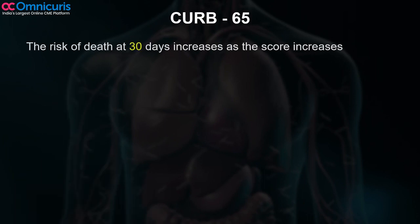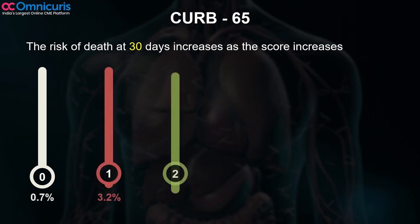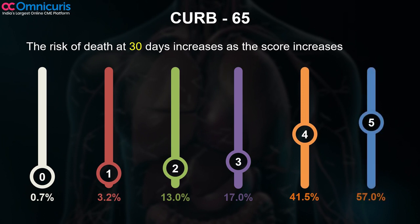Studies have shown that the risk of death at 30 days increases proportionate to the score. With a score of 0, death was 0.7%; with 1, 3.2%; with 2, 13%; with 3, 17%; with 4, 41.5%; and with 5, 57%. Clearly this score has very important prognostic value in predicting death in the first 30 days of this illness.